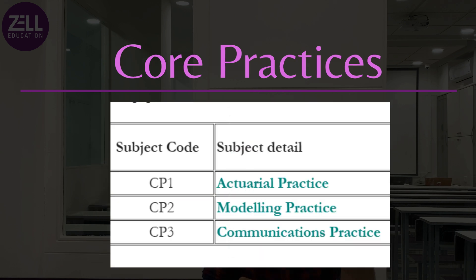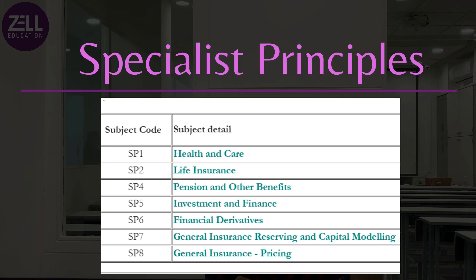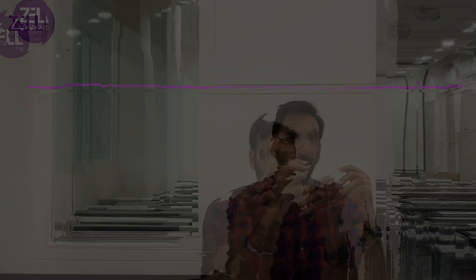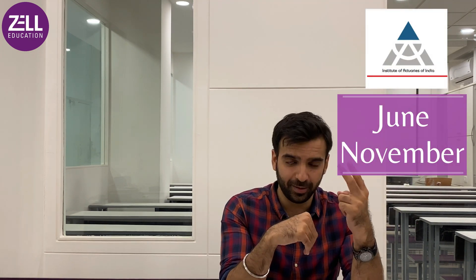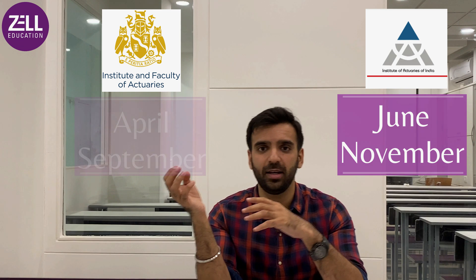The academic structure for both the Indian and UK bodies is the same. The exams are split into 13 exams, further divided into four sections: Core Principles, Core Practices, Specialist Principles, and Specialist Advanced. For the Indian body, exams are around three hours fifteen minutes; for the UK body, three hours. Indian body exams are held every June and November, while UK body exams are held every April and September — both twice a year.